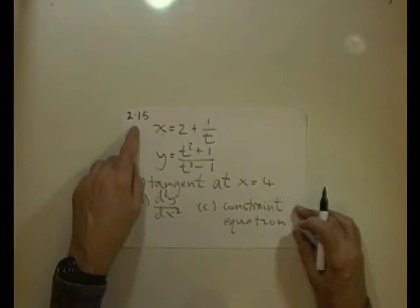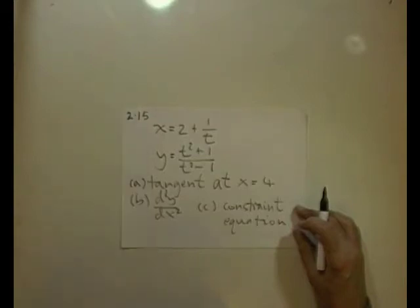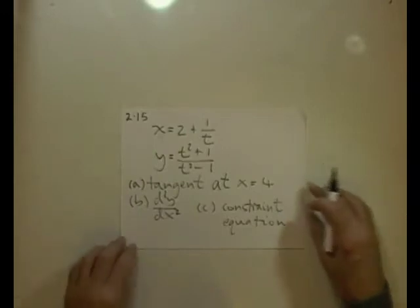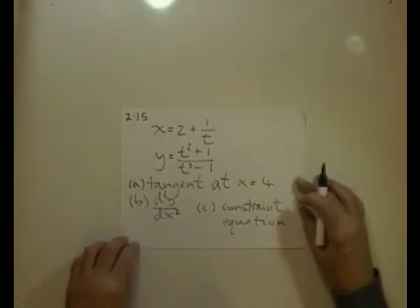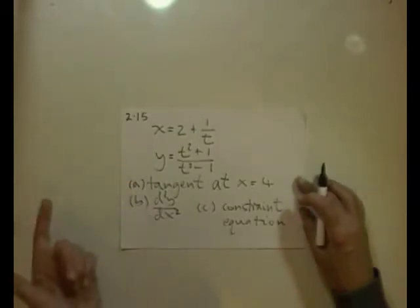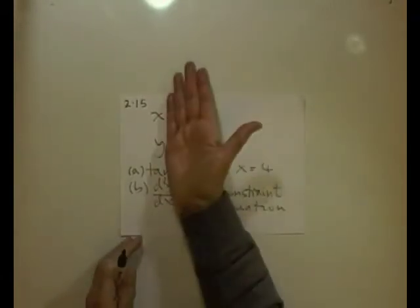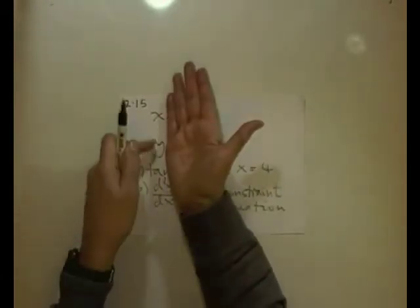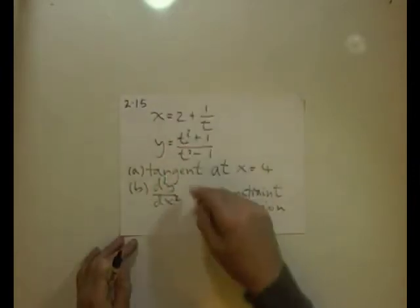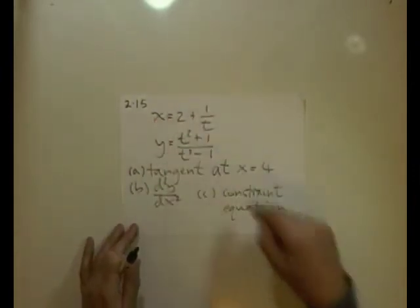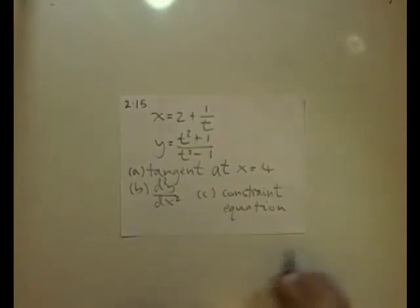Question 2.15 from Advanced Higher Maths Camp — parametric equations, a longer question this time. We're finding the tangent to the curve, the second derivative as before, and the constraint equation. The constraint equation is the equation that connects y and x directly, instead of each of them being expressed independently in terms of parameter t.